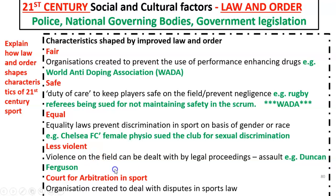Finally, there is the Court for Arbitration in Sport, or CAS — the highest court of law for sport. If somebody gets banned from taking part in sport, for example for taking performance-enhancing drugs, they can appeal to the CAS, which will review whether that ban can be overturned. Russia, for example, appealed to the CAS when they were caught with institutionalised state doping, and the CAS can reduce sentences.